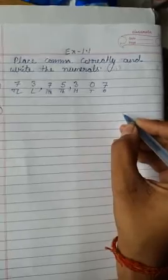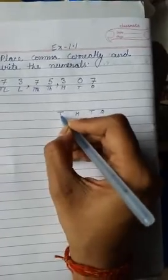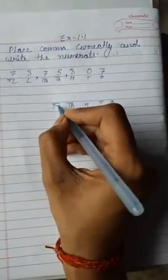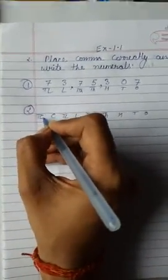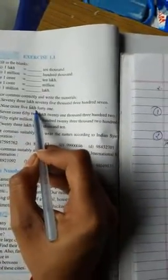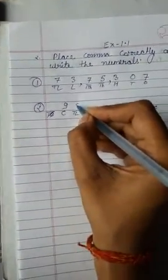The next question is: nine crore, five lakh, forty-one. Again we write the place values — ones, tens, hundreds, thousands, ten-thousands, lakhs, ten-lakhs, crores, ten-crores. It gives nine crore — only one digit, so we write 9 in the crore place. Next is five lakh — only one digit, so we write 05 in the lakh places.